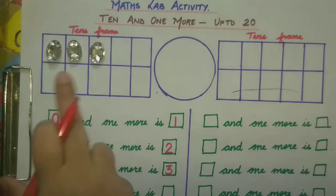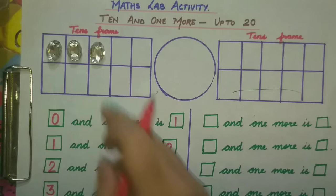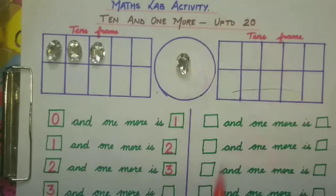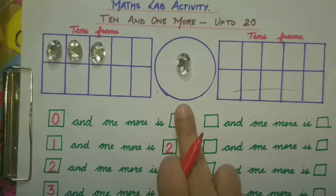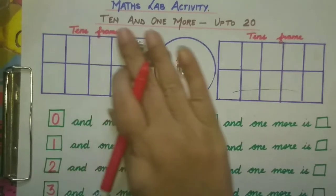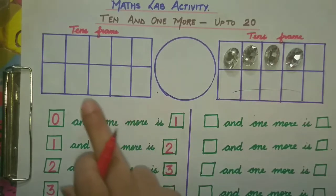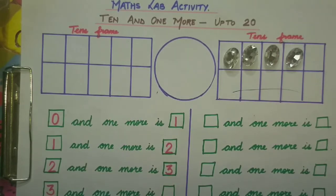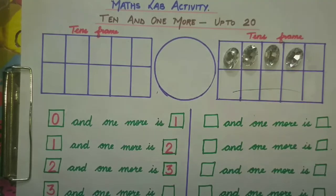Our first number is now 3. So we will write 3 in the first box. 3 and 1 more — to find out, we will bring all of them together in the second frame. So 3 and 1 more is 1, 2, 3, 4. 3 and 1 more is 4.